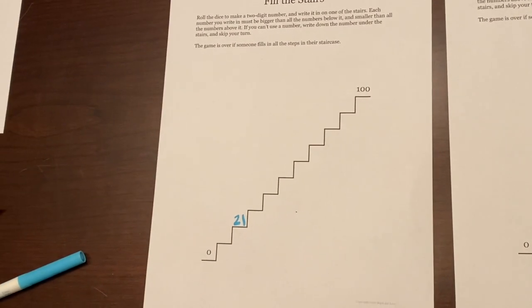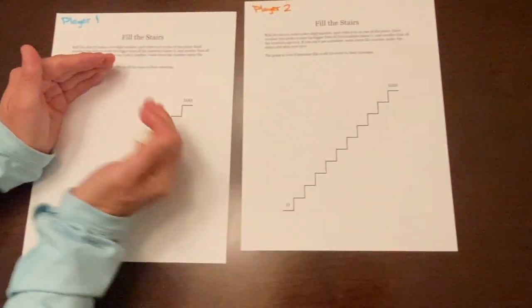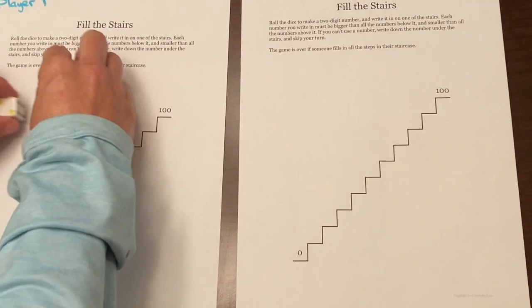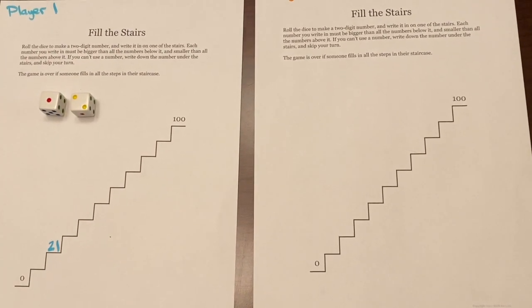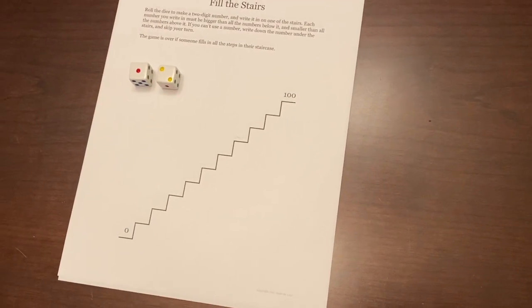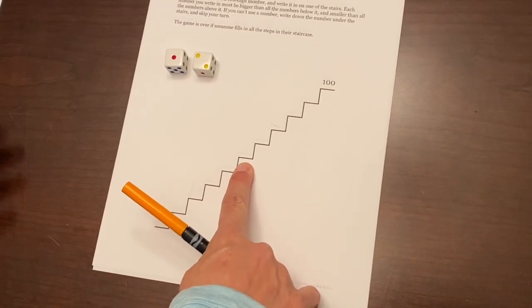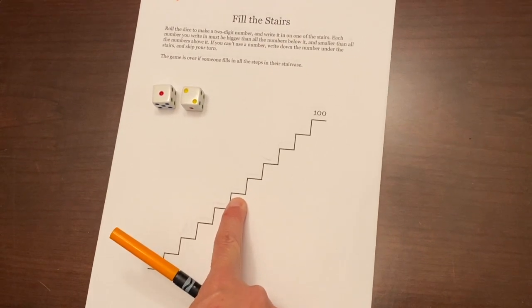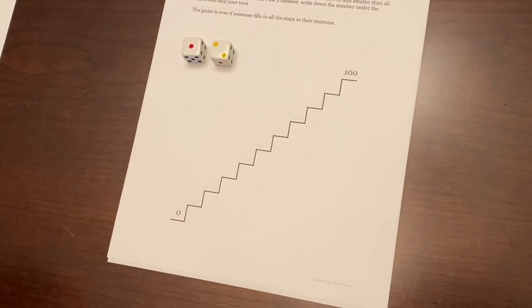Okay, player number two rolls the dice. I'll roll it for him because he is the cameraman. Oh, got the exact same thing, 21. Let's say cameraman wants to do 12. So on his 12 he could put it here, and if he did that would be okay and I would let him and ask him, how do you think that will impact your game?